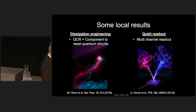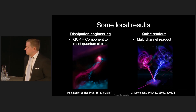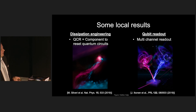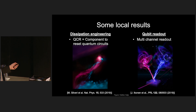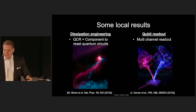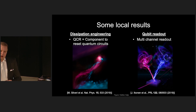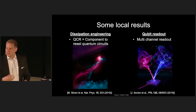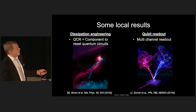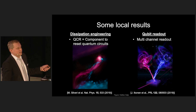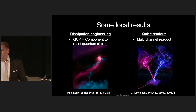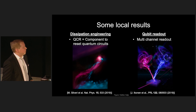Now I want to go a little deeper into two different results we have achieved or published this year. We have been focusing a lot on the engineering of dissipation in circuits — you don't only want to get rid of dissipation all the time, but at some point in solving problems, you may want to introduce dissipation controllably into the circuit, for example in resetting qubits. I'm also going to talk about qubit readout — how to read the quantum information very fast. I will go into this topic first.